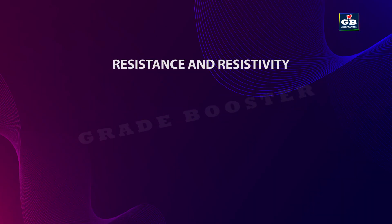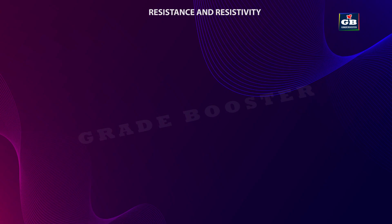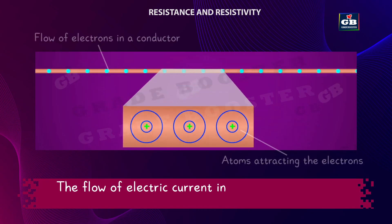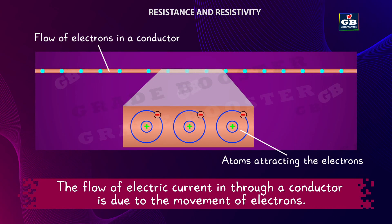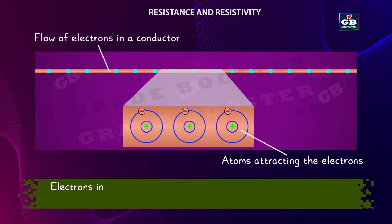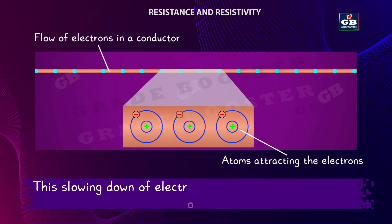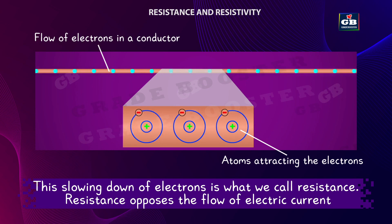Resistance and Resistivity. Now let us understand more about resistance. Why do conductors show resistance? The flow of electric current through a conductor is due to the movement of electrons. Electrons in a conductor aren't completely free — they are attracted by the atoms in the material, which slows down their movement. This slowing down of electrons is what we call resistance, and resistance opposes the flow of electric current.